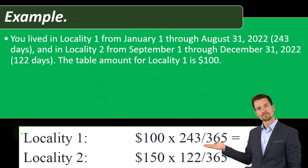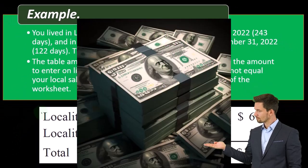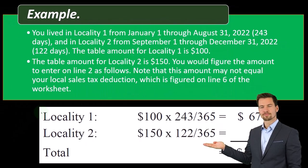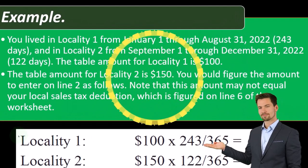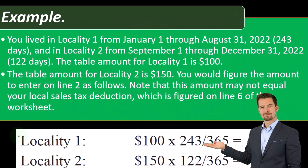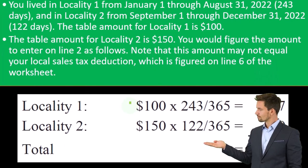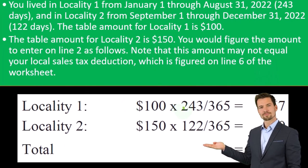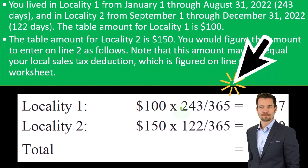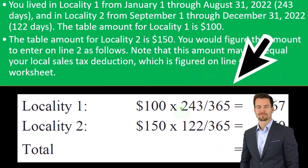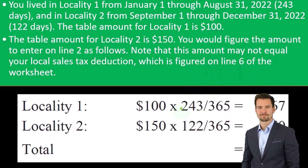122 days. The table amount for locality one is $100. The table amount for locality two is $150. You would figure the amount to enter on line two as follows. Note that this amount may not equal your local sales tax deduction, which is figured on line six of the worksheet. We've got the 100 and the 150 and we're breaking it out using our fraction — the number of days in locality one, 243, divided by 365.